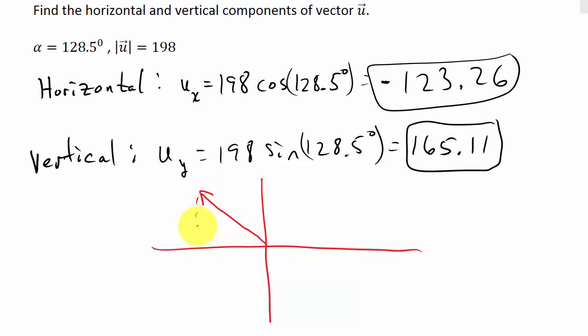Okay, and you can see this is the negative 123.26, and this is the 165.11. Okay. This right here, there's your horizontal and vertical component. That's your negative 123.26, 165.11. Okay, so that's what we found.